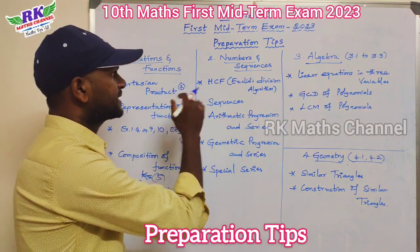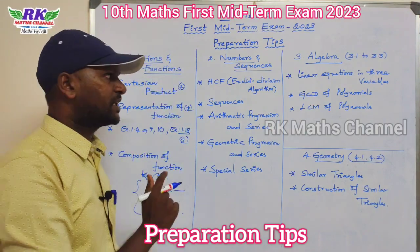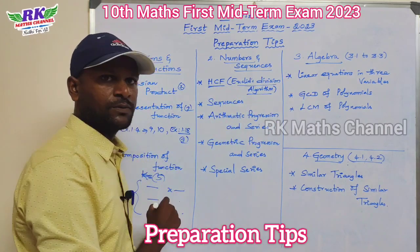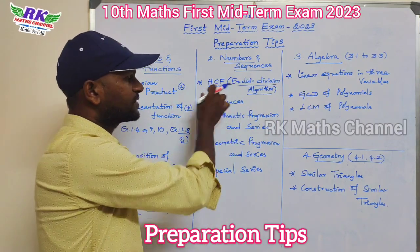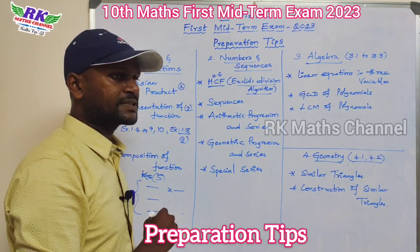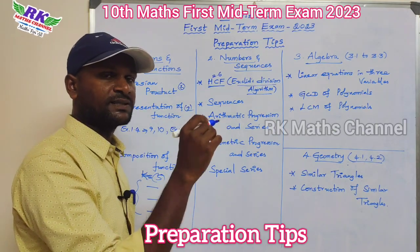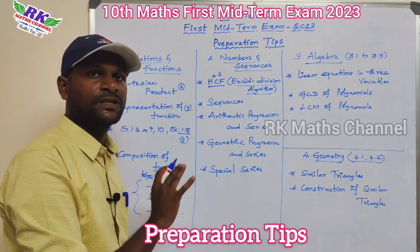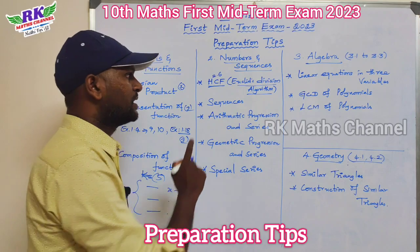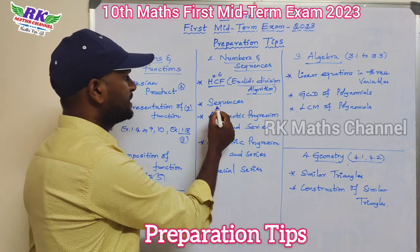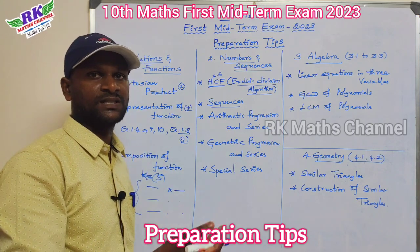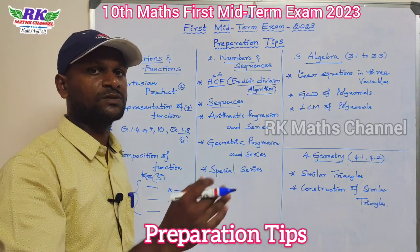Next, second chapter: Numbers and Sequence. Topic 1 is Euclid's Division Algorithm for HCF. Topic 2 is the Fundamental Theorem of Arithmetic. Congruence modulo operations are 2-mark questions.